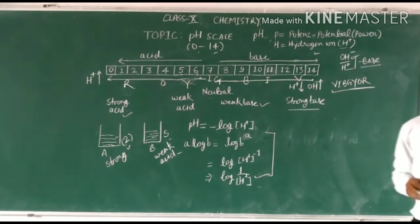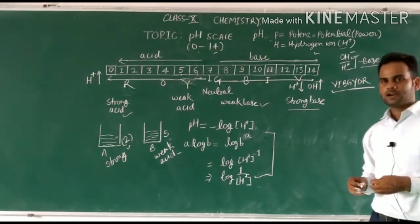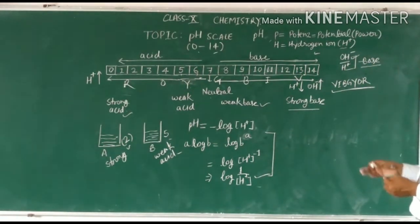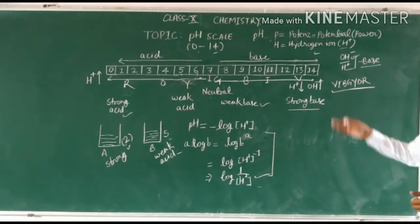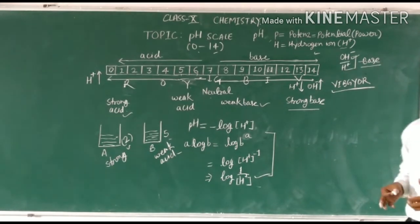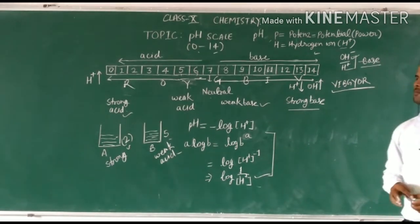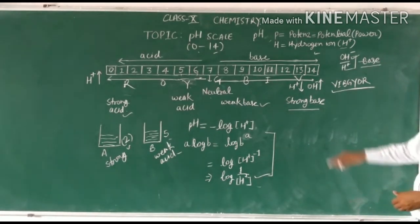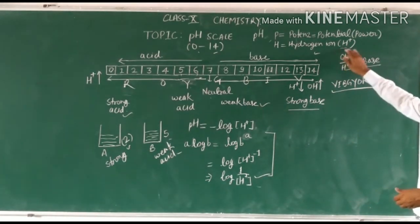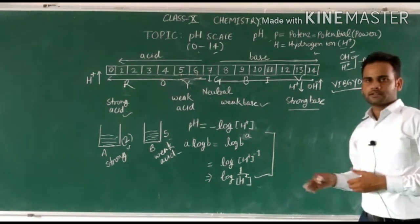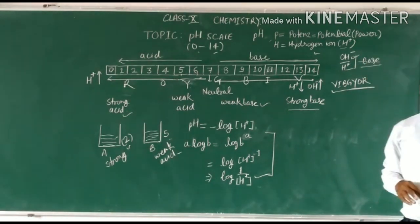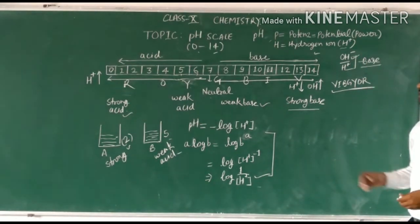pH scale is a scale which tells us about the strength of the acid or base on the basis of hydrogen ion concentration in it. I hope it is clear now. Thank you.